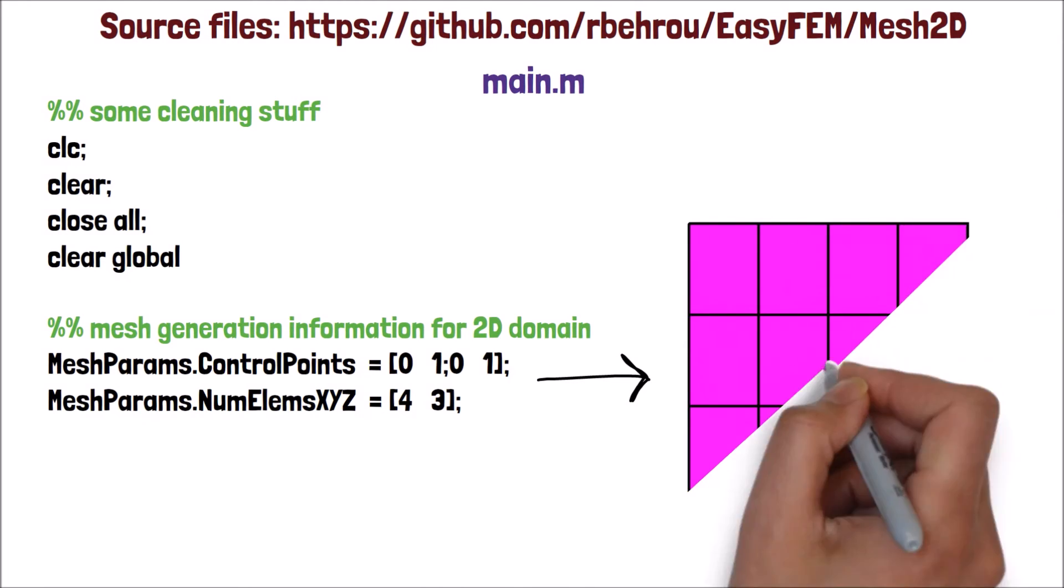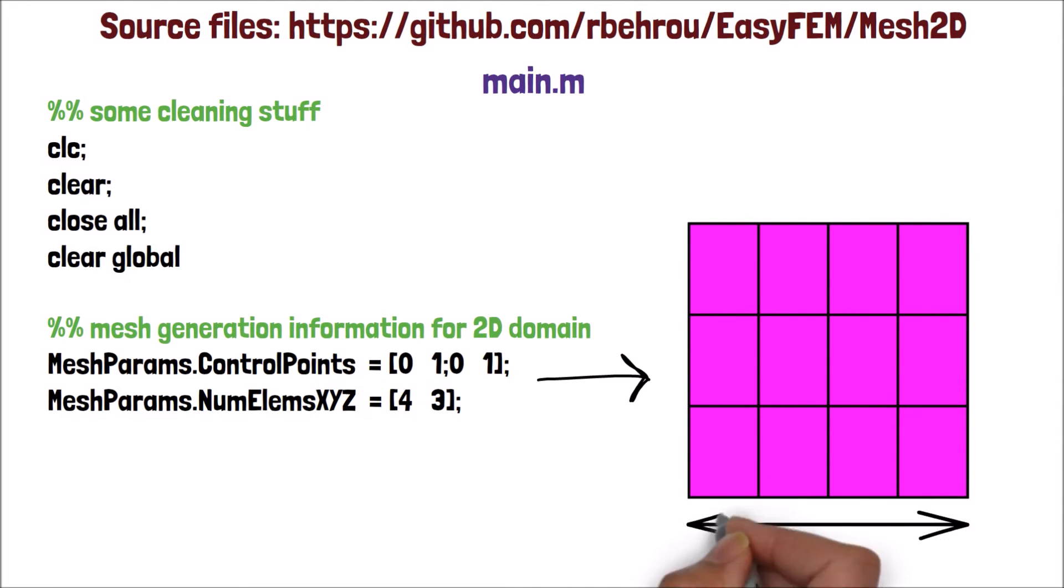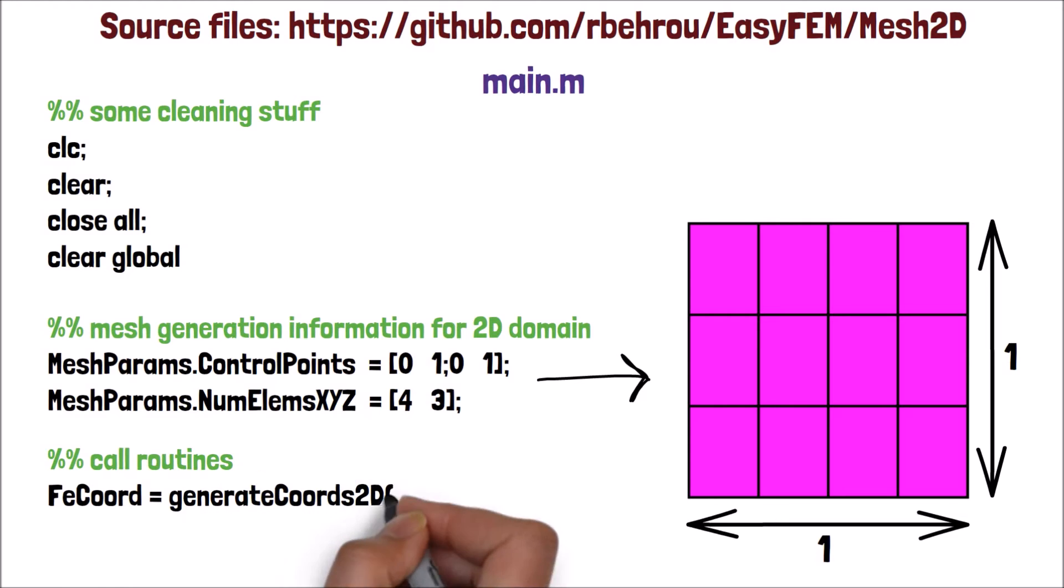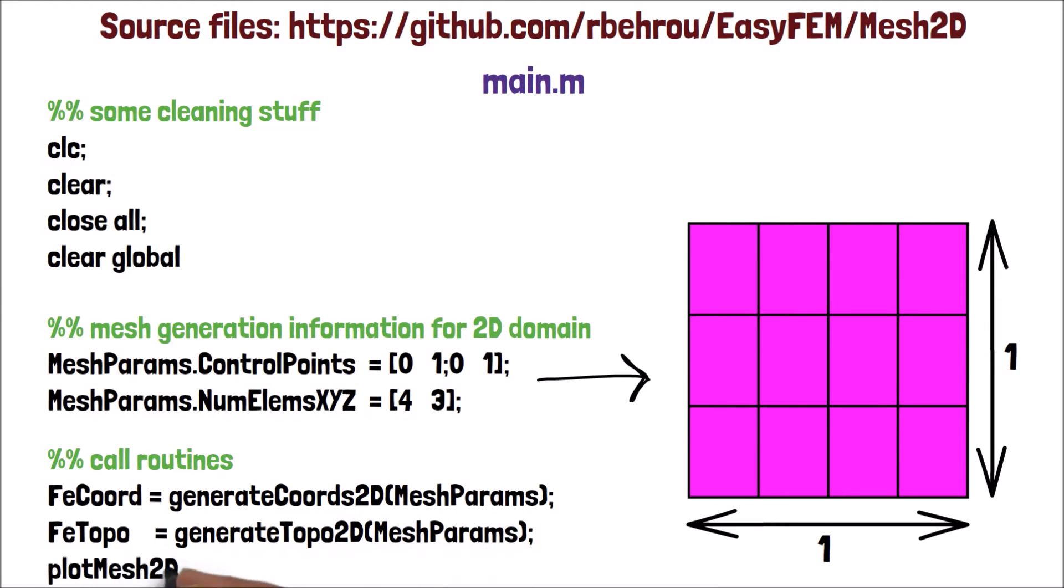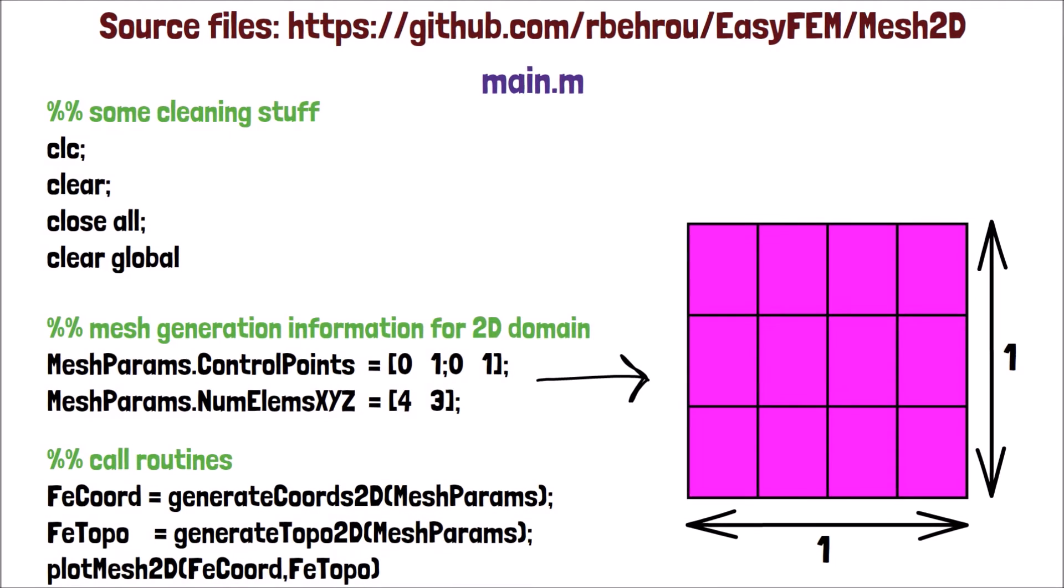The last step is to pass the meshParams into the generateCoords2d and generateTOPO2d functions, and get the nodal coordinates and the connectivity matrix. Then, to visualize the mesh, we can pass the nodal coordinates and the connectivity matrix into the plotMesh2d function.